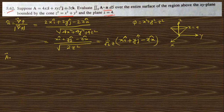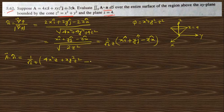Now we want to find A·n-cap. Dotting the vector A with n-cap gives (1/√2 z) times the bracket: x multiplied gives 4x²z, y multiplied gives xy²z², and z multiplied gives −3z². This z cancels, so A·n-cap becomes (1/√2)(4x² + xy²z − 3z).